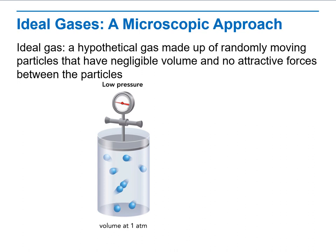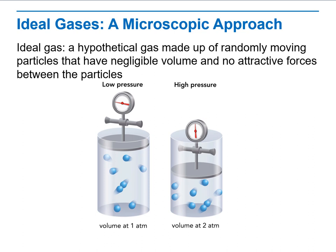Then we will go through the concept of ideal gas. What is an ideal gas? It's a model used to approximate the behavior of real gases. You can see here how the volume affects the pressure, or how the volume and pressure are related. By decreasing the volume, what happens? We increase the pressure.